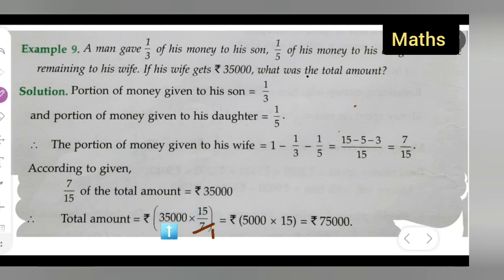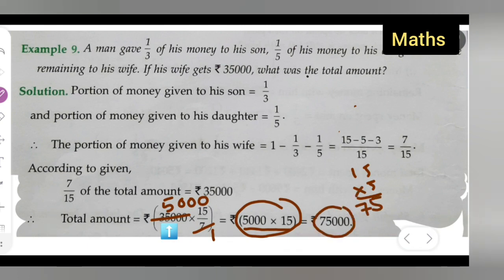You can write down 7 into 35,000 gives you 5,000. Then multiply by 15. 5 times 15 is 75, so you get ₹75,000. Add the three zeros, so the answer is ₹75,000.